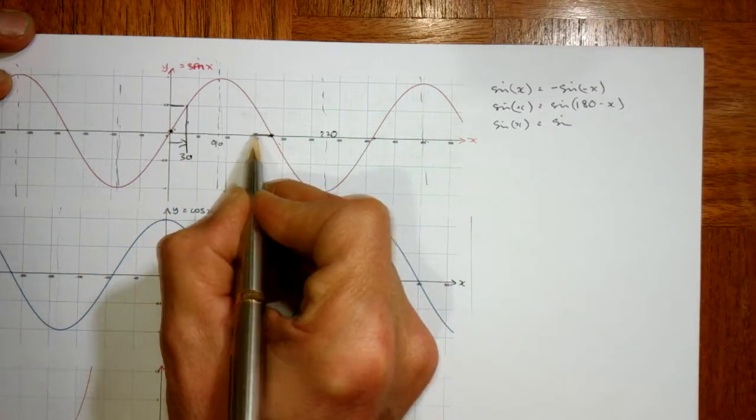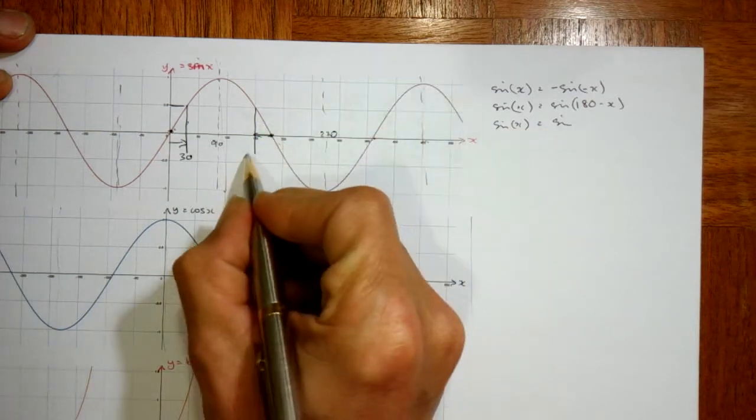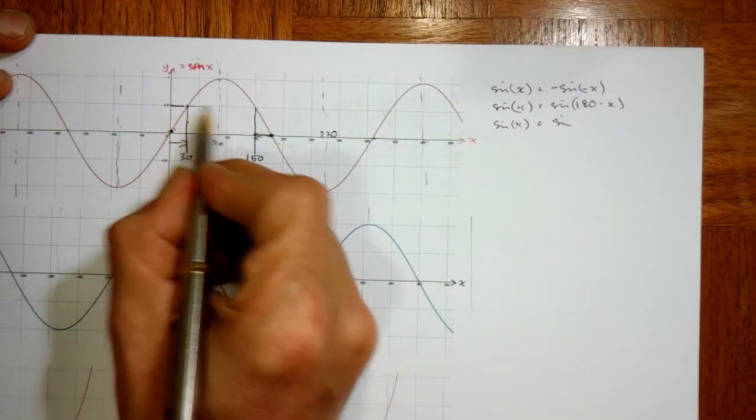If we start at 180 and come back 30 degrees, 150, the y value is exactly the same.